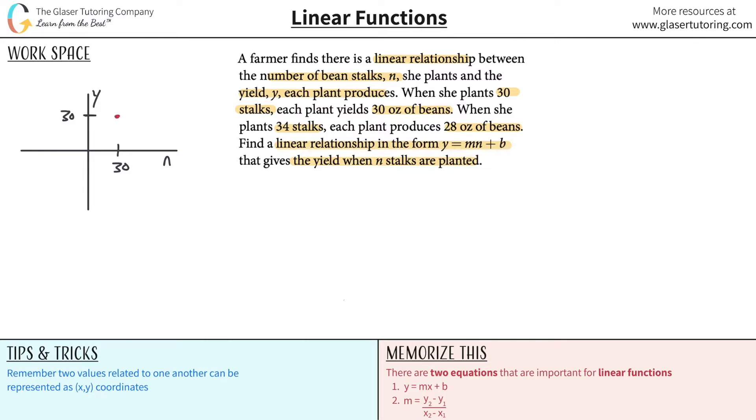And now they're saying that let's assume we're going to plant 34 stalks now, okay? So we'll go up to 34. This is obviously not to scale. And now each plant will produce 28 ounces of beans. So you might say, well, wait, how did that drop?